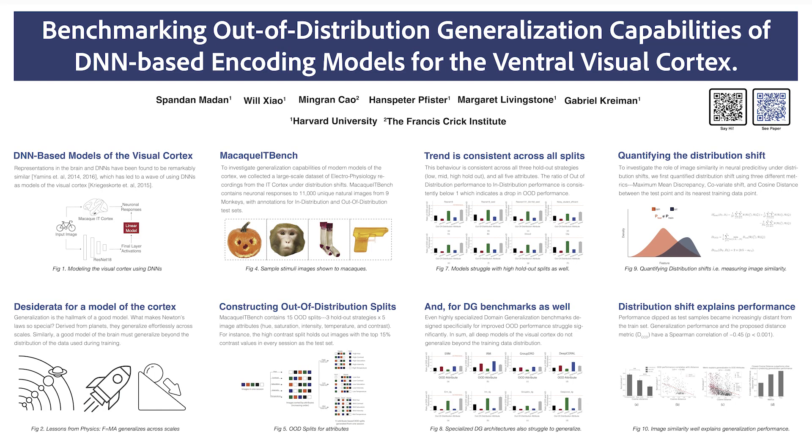This data set is freely available to download — you can find more in the paper. We've already made it available for AI researchers to easily download and use, by splitting the data into in-distribution and out-of-distribution data sets, which people can use to study generalization.